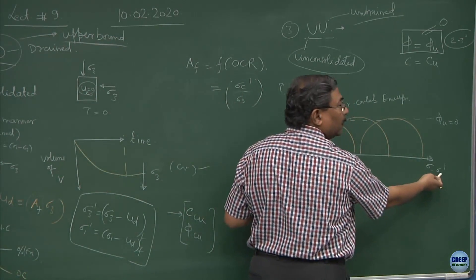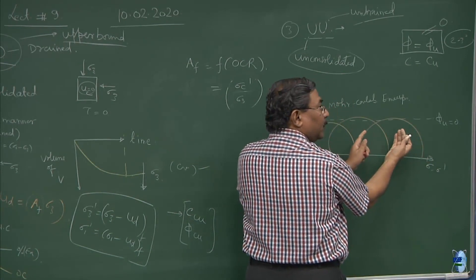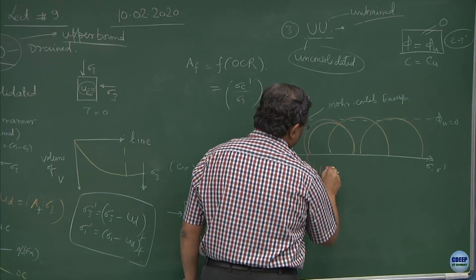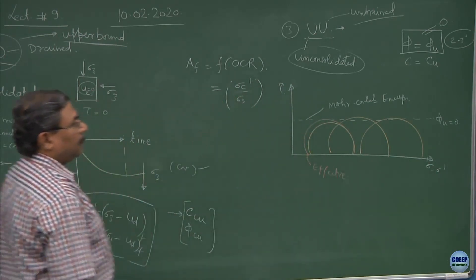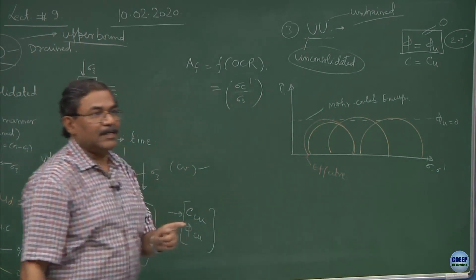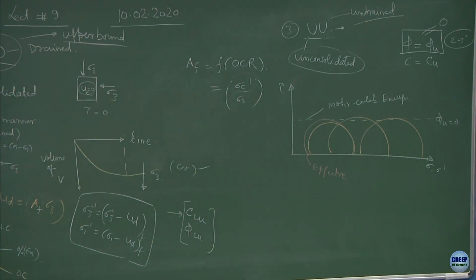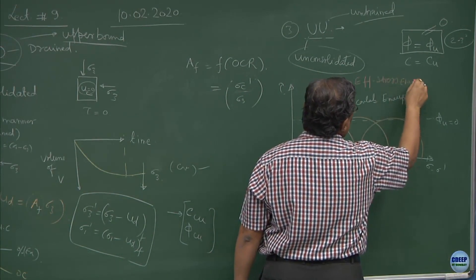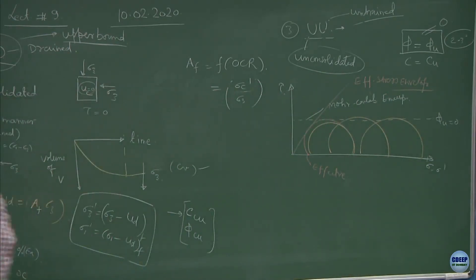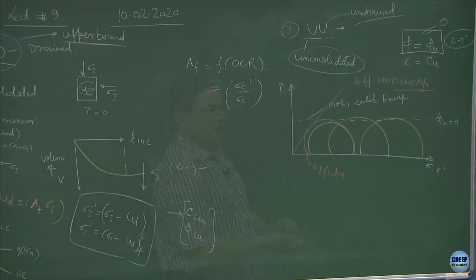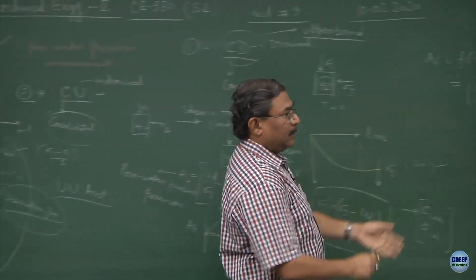In effective form, if I have to write, what is going to happen? All these Mohr circles are going to get overlapped on one. This is how the effective Mohr circle will look like by subtracting the pore pressure, you will be having a unique circle. What should I do then? NC material, C is going to be 0 and only phi will get mobilized. This is your effective stress envelope. I can measure the pore pressures and I can apply this correction from sigma 1, sigma 3 to get the effective stress envelope.